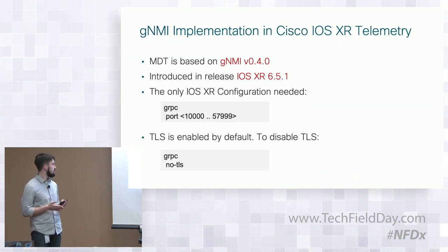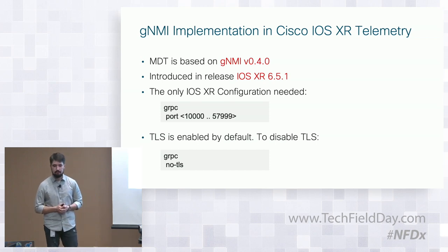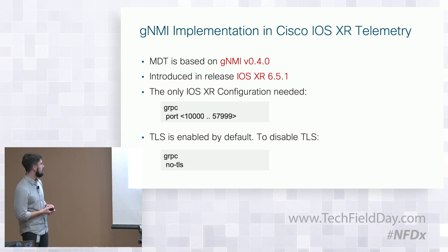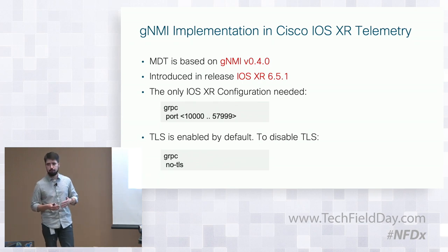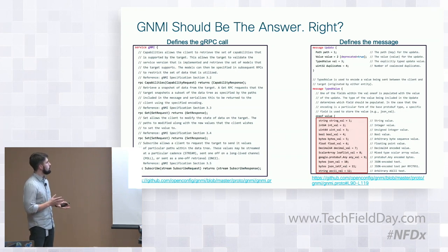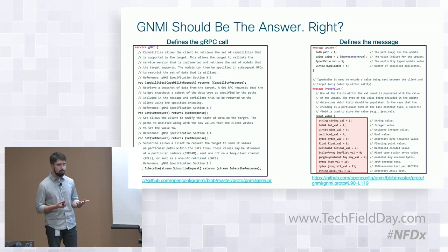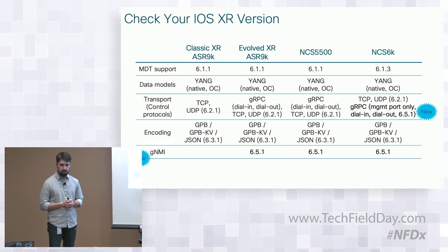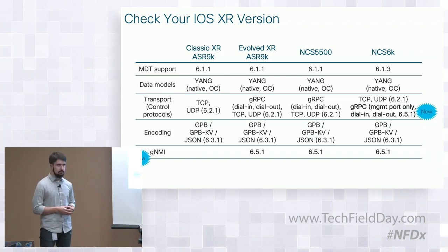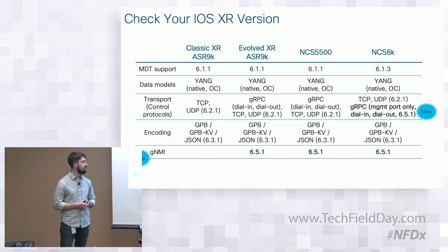GNMI implementation in Cisco IOS XR is based on 0.4, introduced in release 651. Configuration is very simple — we just need to specify gRPC and the port. TLS is enabled by default, but if you want to switch it off for a sandbox or lab environment, you just provide the 'no TLS' keyword. GNMI should be the right answer for your streaming data because it allows you to unify all information and rely on a single mechanism. In 651, GNMI support was introduced on evolved XR on ISR9K, NCS5500 family, and NCS6K.